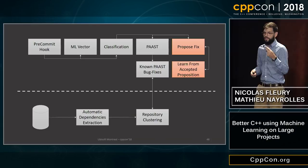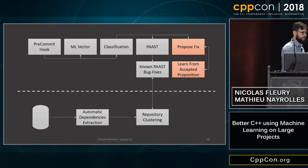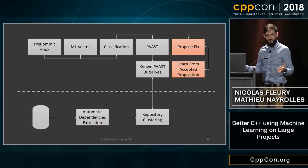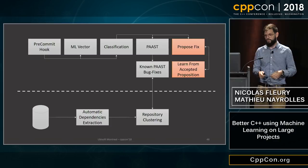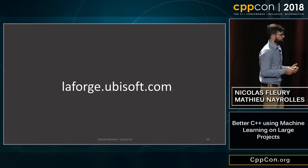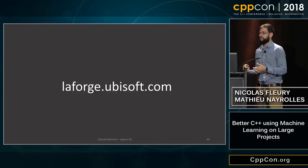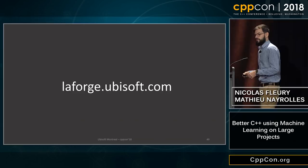There are two boxes in red in the pipeline because we are currently working on them — the part where we actually propose the fix to the developer and where we learn which suggestions are likely to be accepted are not live yet. The live part is the riskiness prediction. We have been working on this for quite a long time, and you can find all the theoretical background at laforge.ubisoft.com.